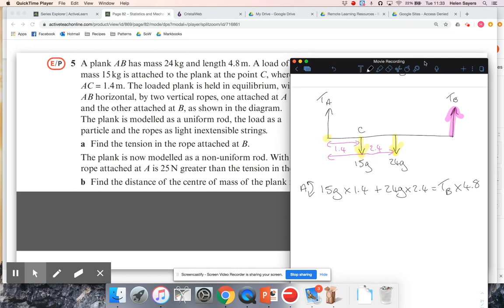So that's going to be fine. We've got just one unknown in there. So 15 times 1.4, so 21g plus 24 times 2.4, 57.6g is 4.8 times the tension at B. So I'm getting that to be 770.28. You could leave this in terms of G. That'd be absolutely fine. They've given their forces in terms of G. I'll just work it out as a full value. So I get that to the tension at B to be 160.475, so 160 newtons to three significant figures.